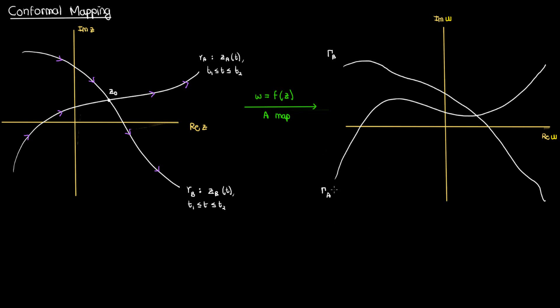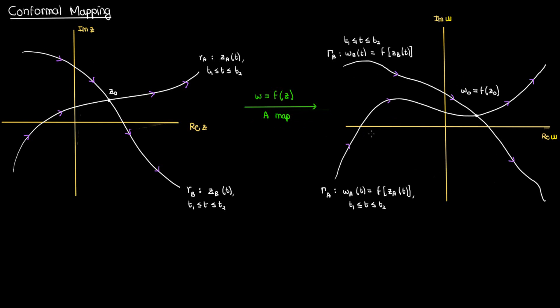Another way to define capital gamma a is to write it as w_a of t, where w_a of t is really just the function f applied to z_a of t. The same logic can be applied to capital gamma b except now we have w_b of t. Just like gamma a and gamma b, the image curves capital gamma a and capital gamma b are also directed. The intersection of these curves I'm going to call w naught, which is really just f of z naught.